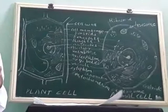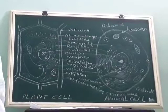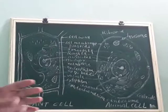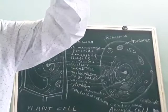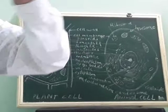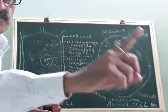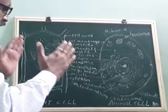Gradually people started showing interest. Two scientists called Schleiden and Schwann studied about the cell using biozium microscopes and came to a conclusion — they gave the cell theory. The cell theory states: first, cells are the basic unit of living organisms; second, all living organisms are made up of cells.